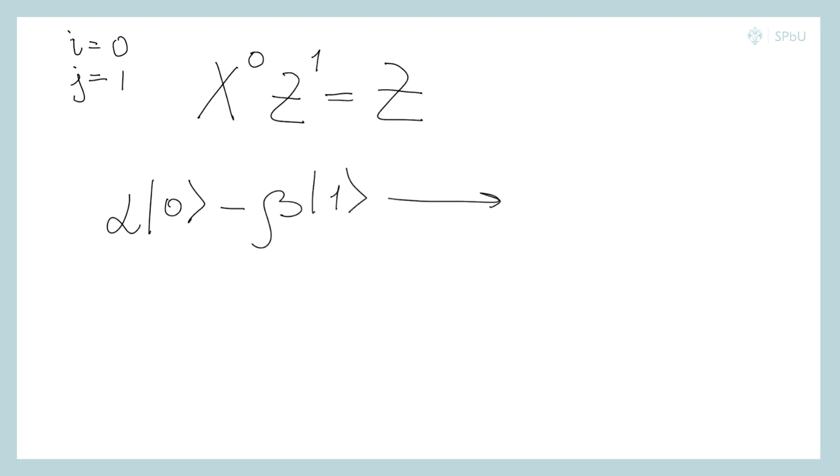After the Z transform will turn to a state alpha 0 plus beta 1. And this is the exact initial state psi. So Bob has managed to restore the initial qubit state.